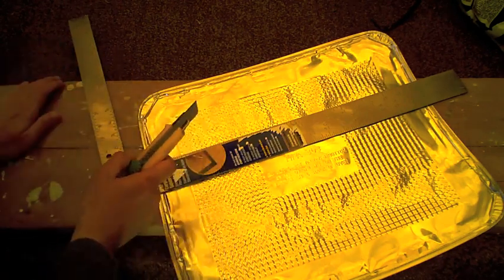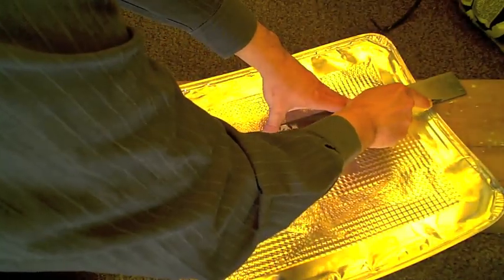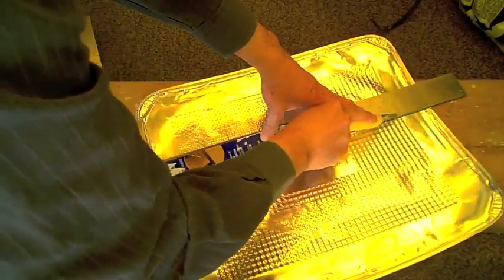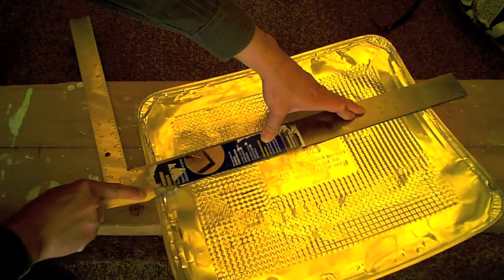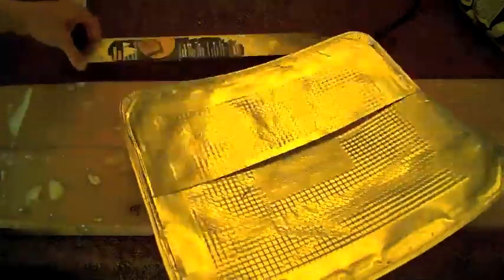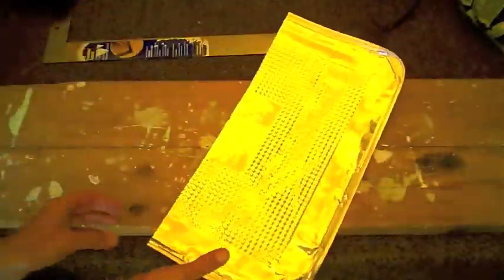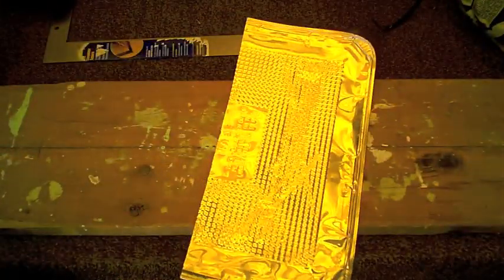Now this is going to dull our blade obviously, but that's quite alright. So we'll just start over here, make a cut all the way across from here. Alright, so there we have the startings of our windshield.